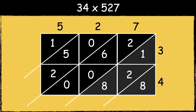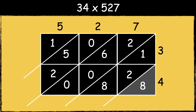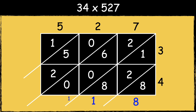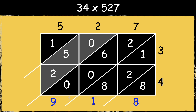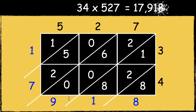The next step is to add along the diagonal strips, starting in the ones place going from right to left. In the ones place we have 8. In the tens place we have 8 add 2 add 1, which is 11. We will carry the extra 10 over to the next column. Then we have 6 add 2 add 1, which is 9. In the thousands column we have 2 add 5, which is 7. And then we have 1 in the ten thousands column. So the answer is 17,918.